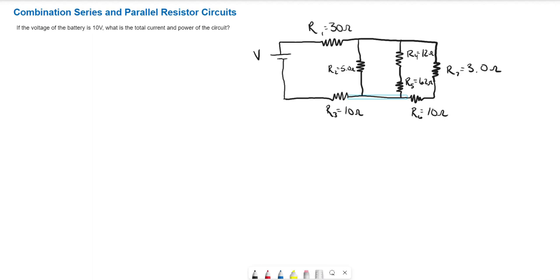In this video, we're going to go through this combination series and parallel resistor circuit, and we're going to find the equivalent resistance and then the total current and power in the circuit if the battery is 10 volts.